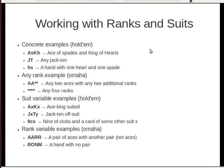A couple of examples working with ranks and suits. AS KH is what you'd expect: ace of spades, king of hearts. JT means any jack-ten regardless of suits. And HS is a hand with a heart and a spade.